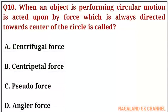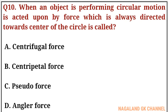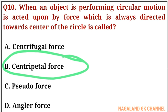Question number ten: when an object is performing circular motion, it is acted upon by a force which is always directed towards the center of the circle. This is called what? The correct answer is option number B, that is centripetal force.